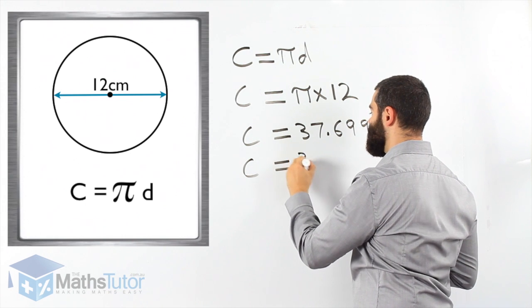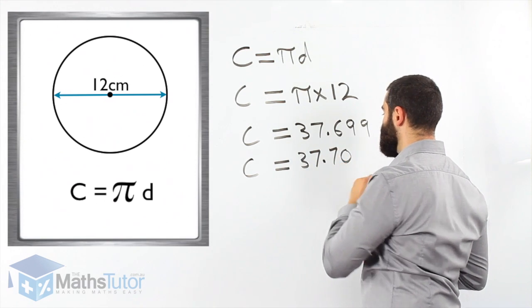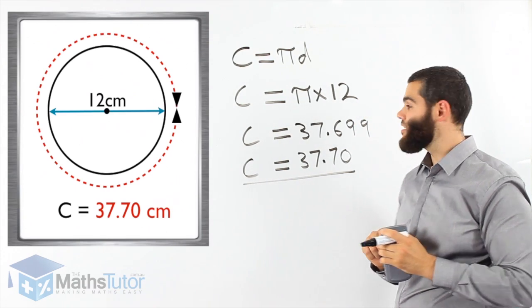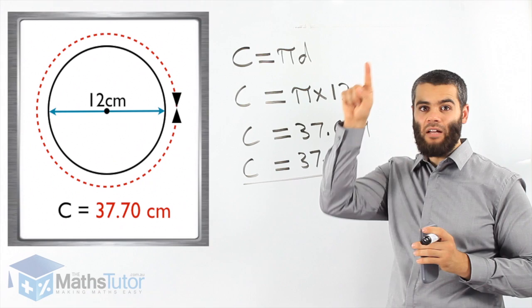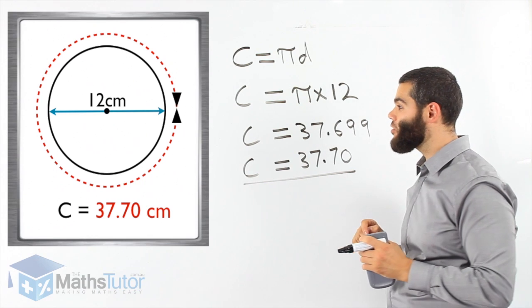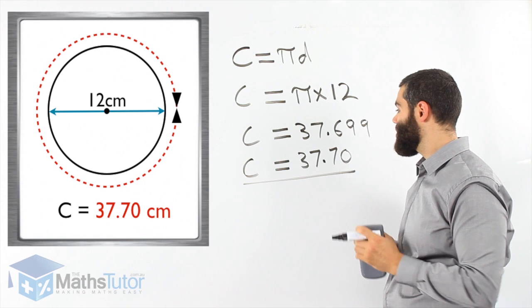And we're just going to write it two decimal places, 37.70. This is our answer. So the circumference of this circle is 37.7 centimeters. So the surrounding around, which is the boundary of the circle that has a diameter of 12 centimeters, is actually 37.70.